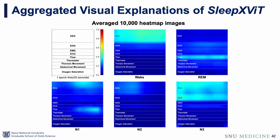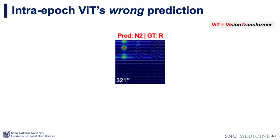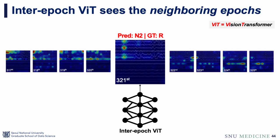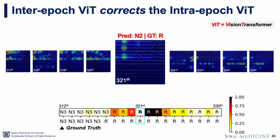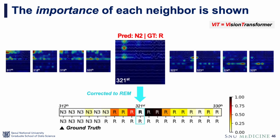We also aggregated heatmaps and found distinct signal regions for each class. Additionally, we showed the impact of the inter-epoch VIT. For example, an image incorrectly classified as N2 by the intra-epoch VIT had an N2-like heatmap and a low confidence score. However, our inter-epoch VIT can see the neighboring epochs, and by learning from context, it corrects the intra-epoch VIT's wrong prediction. The heatmap of the sequence can show the impact of neighboring epochs — darker colors indicate higher relevance to the target epoch.